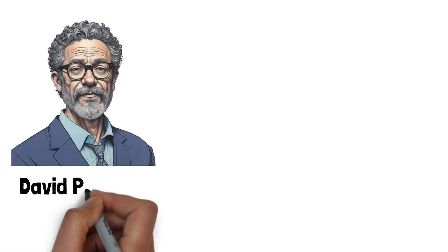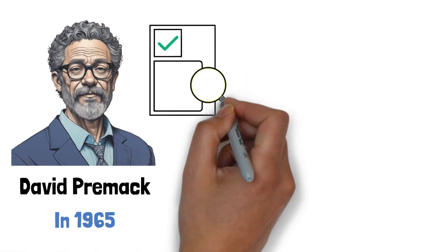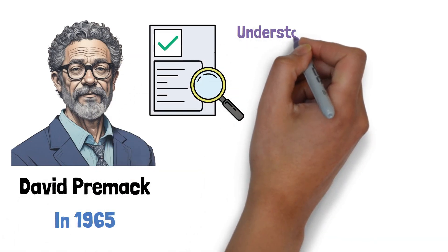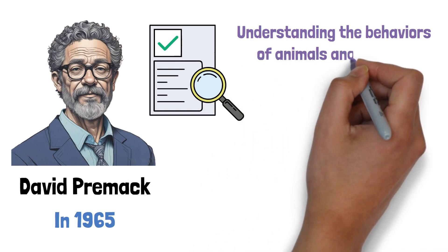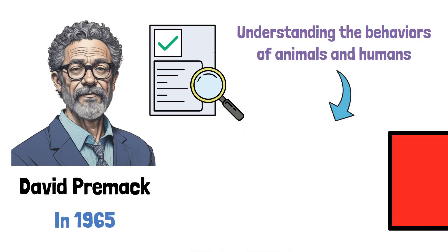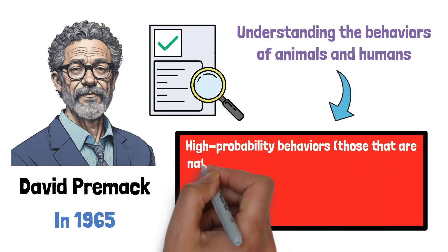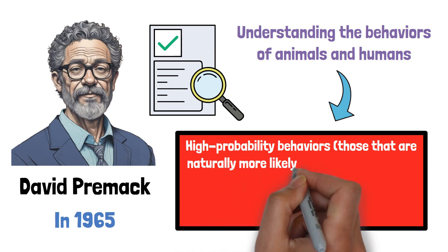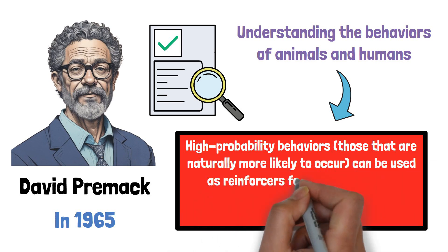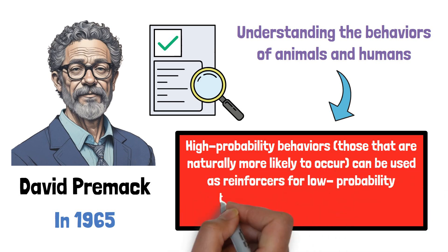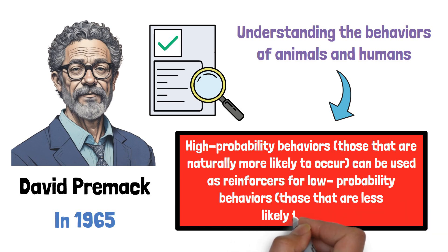David Premack introduced this principle in 1965. His research focused on understanding the behaviors of animals and humans, leading to the conclusion that high probability behaviors — those that are naturally more likely to occur — can be used as reinforcers for low probability behaviors, those that are less likely to occur.